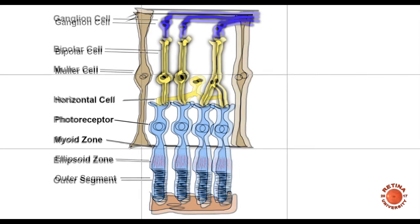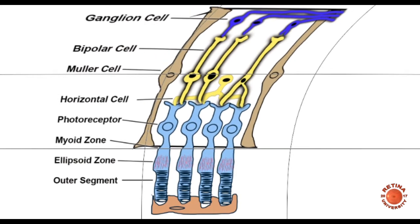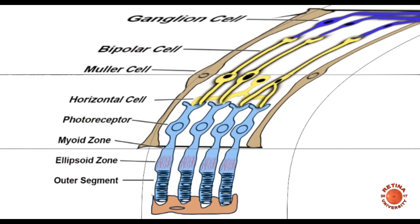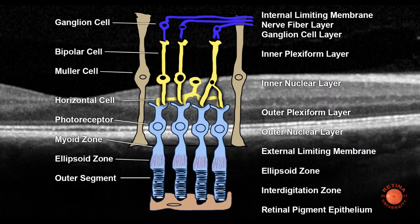The center of the macula looks a little different in that the cells are dragged over a little bit, and the center of the fovea is mostly the photoreceptors and the photoreceptor nuclei. But when you get a little bit off center, then you get the layers of the retina which roughly correspond to what you see on the optical coherence tomography scan.